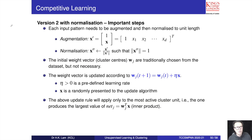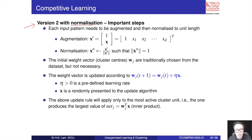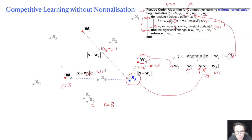Now we go to Version 2 with normalization. Before running the algorithm, we perform augmentation: x1 through xd are the d features of each sample vector x.